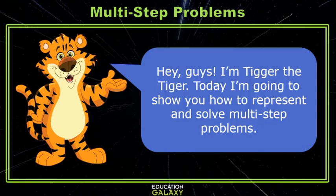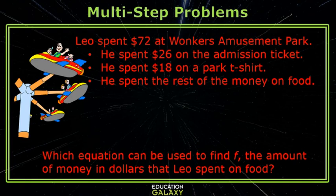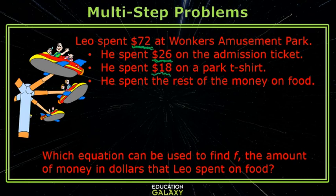Hey guys, I'm Tigger the tiger. Today I'm going to show you how to represent and solve multi-step problems. Let's jump right in. Leo spent $72 at Wonkers Amusement Park. He spent $26 on the admission ticket and he spent $18